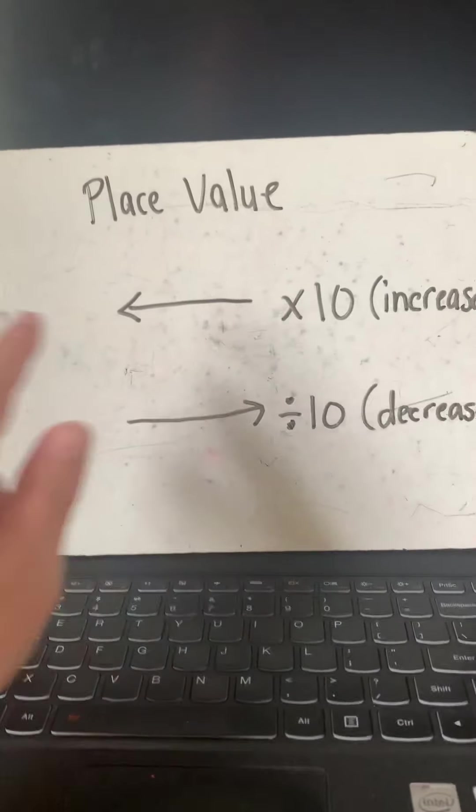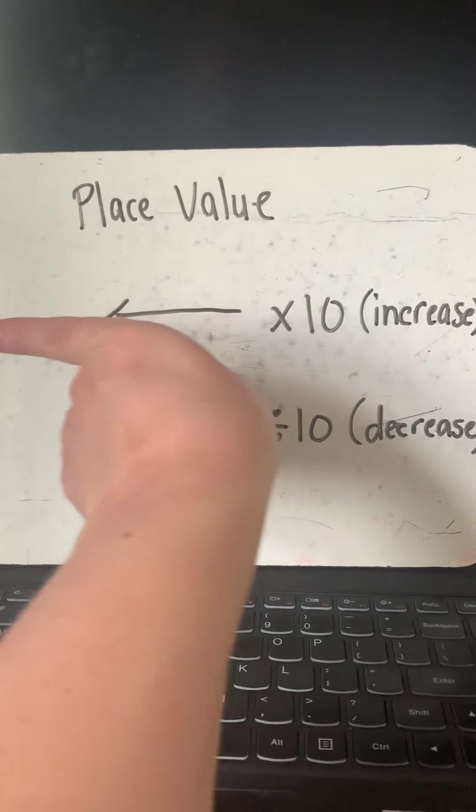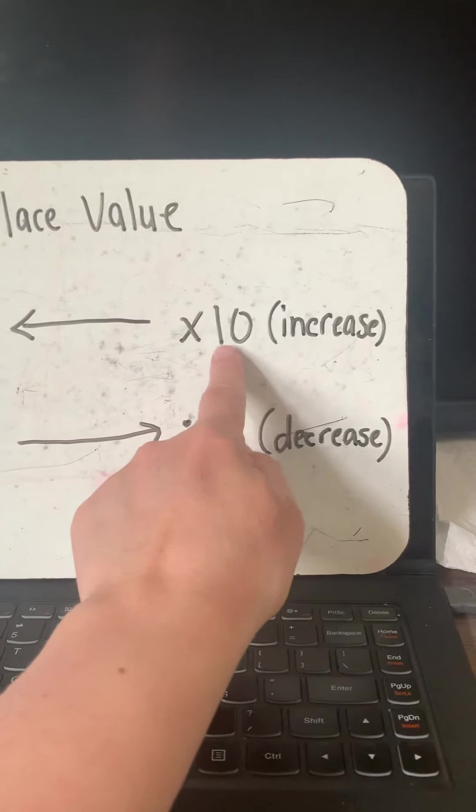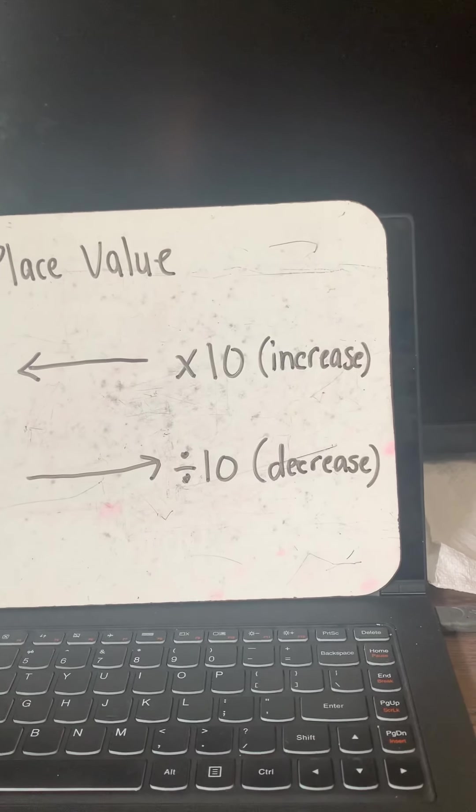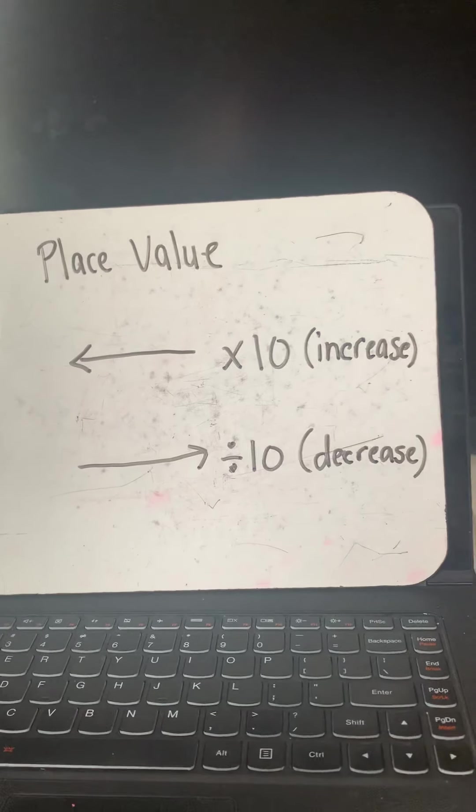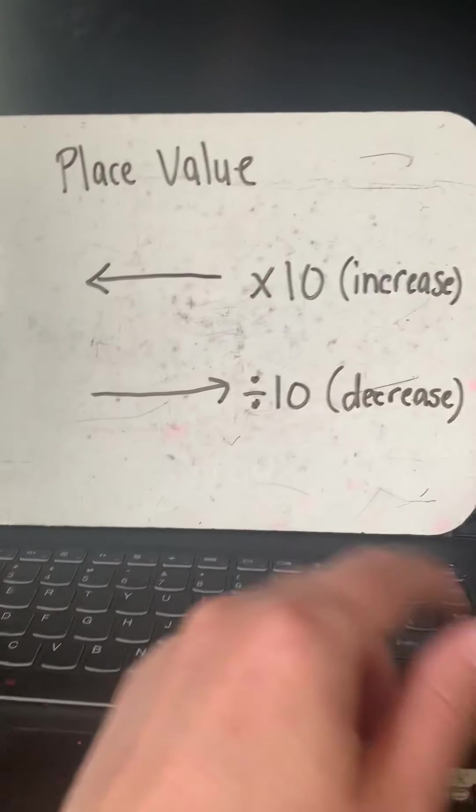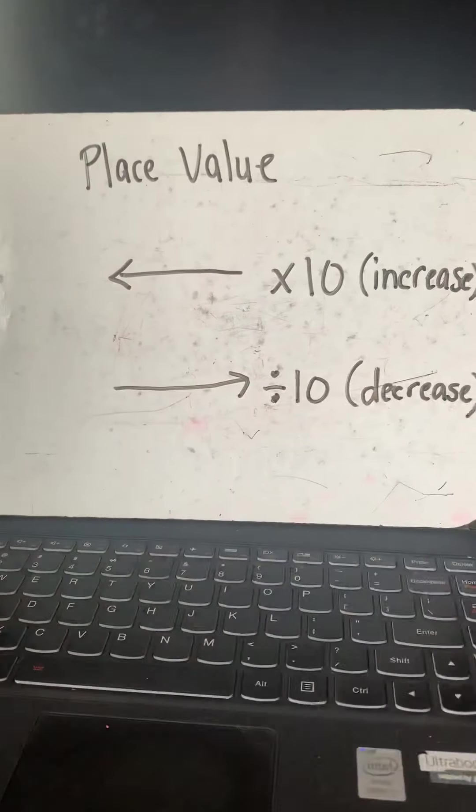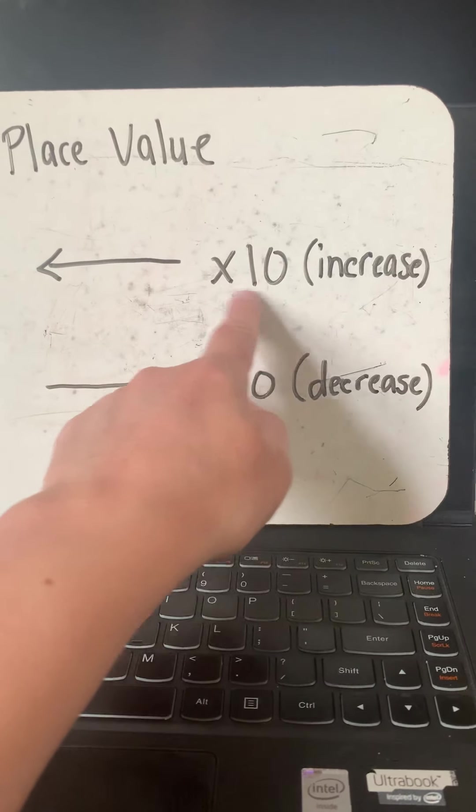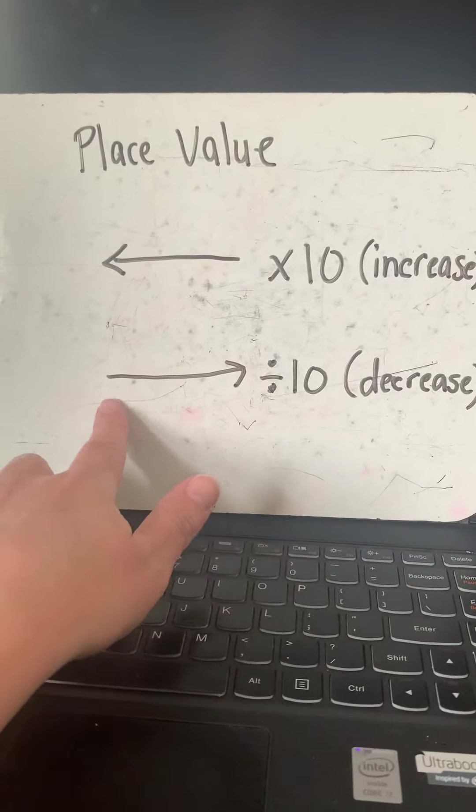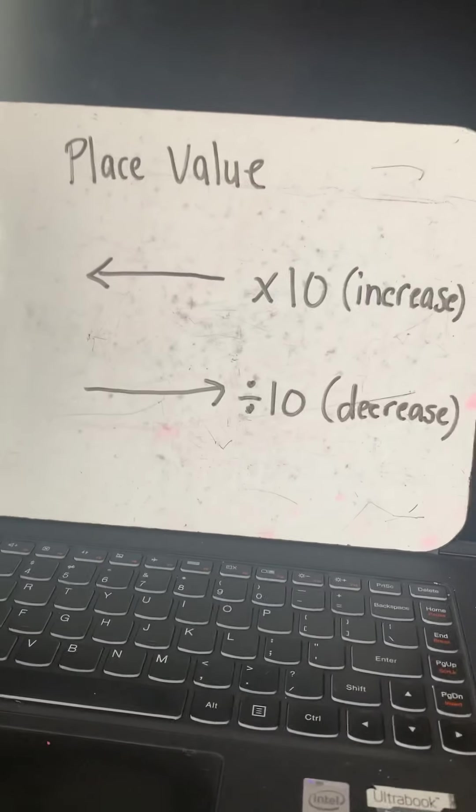And as we've discussed many times on the place value chart, when we go from the right to the left, this way, the value of the number is increasing by 10. Now, the opposite of that - when you go left increasing by 10 would be going right, which is decreasing by 10. So when you go from the right to the left, you are increasing or times 10. And when you are going from the left to the right, you are basically dividing by 10.